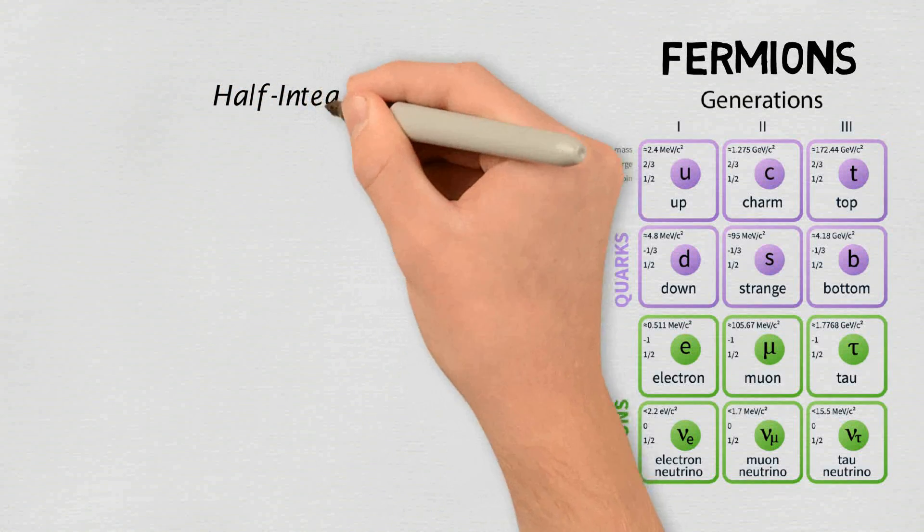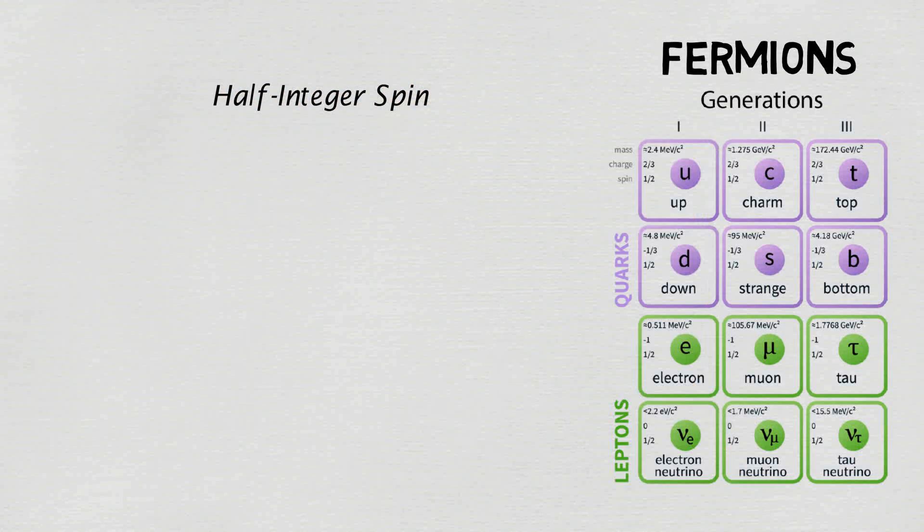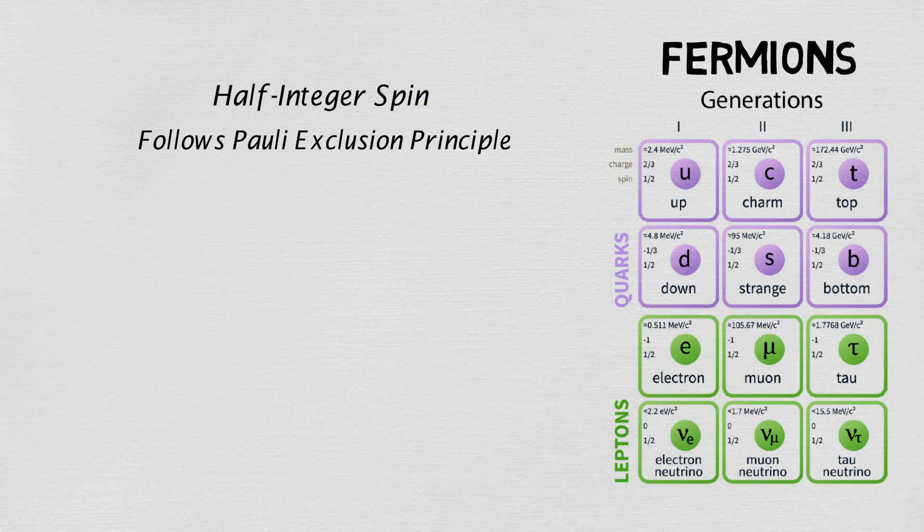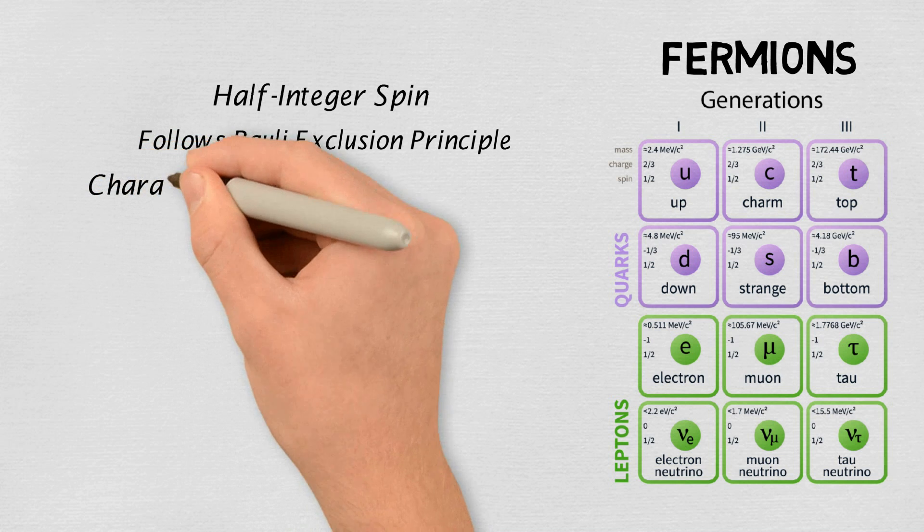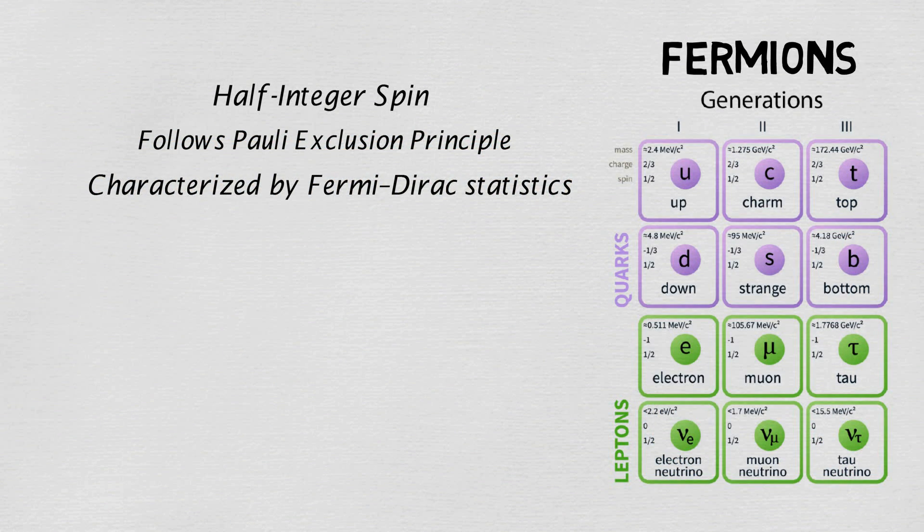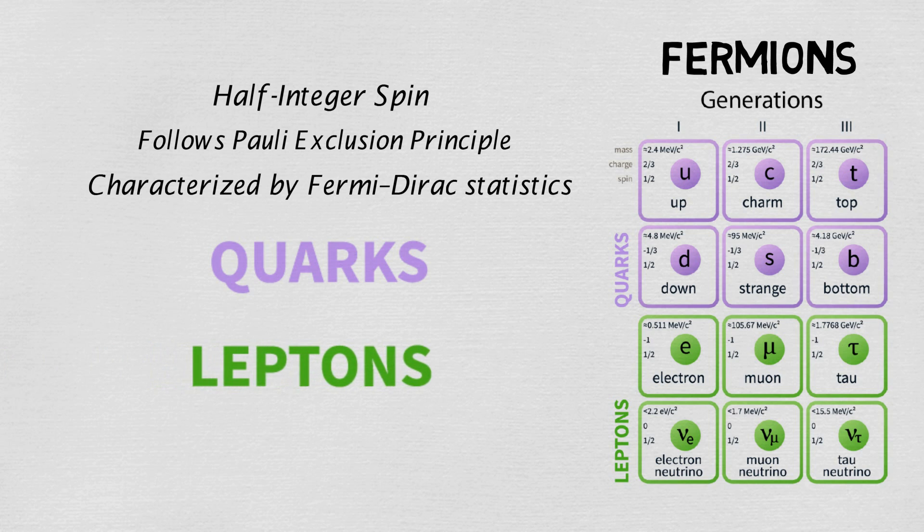Now moving on to fermions. Fermions are the elementary particles with half integer spin value. They follow Pauli exclusion principle and are characterized by Fermi-Dirac statistics. Fermions are classified as quarks and leptons depending on the interactions they undergo. Quarks and leptons both are further classified into three generations depending on their masses.